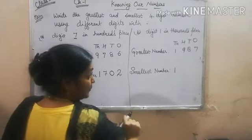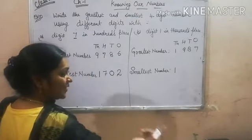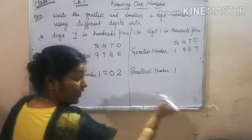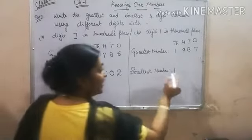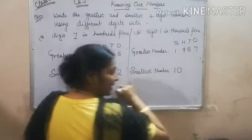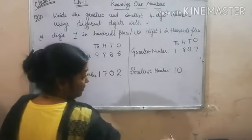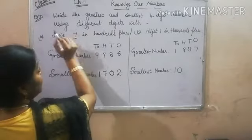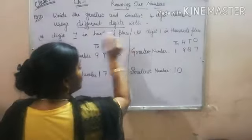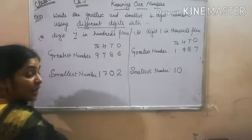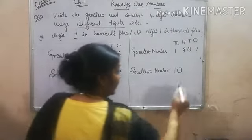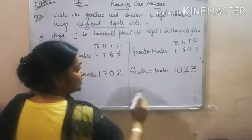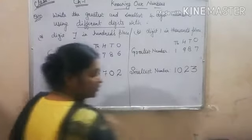For the smallest number, the smallest digit is 0, but it cannot come at the start. So we write 0 at the 100s place. The next digit is 1, but 1 has already been used, so we can't use it twice — the problem requires different digits. The next digit of 1 is 2, and the next is 3. So the smallest number is 1023.